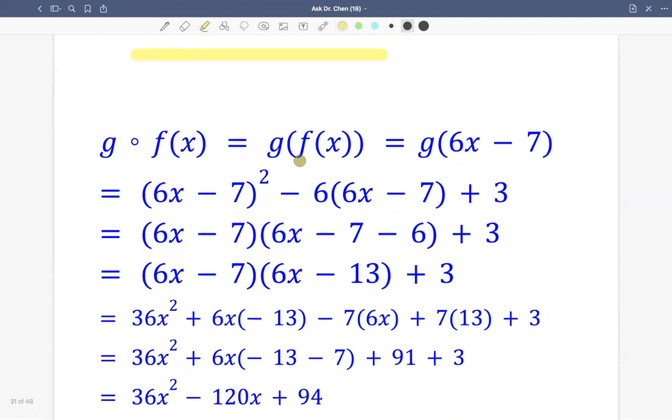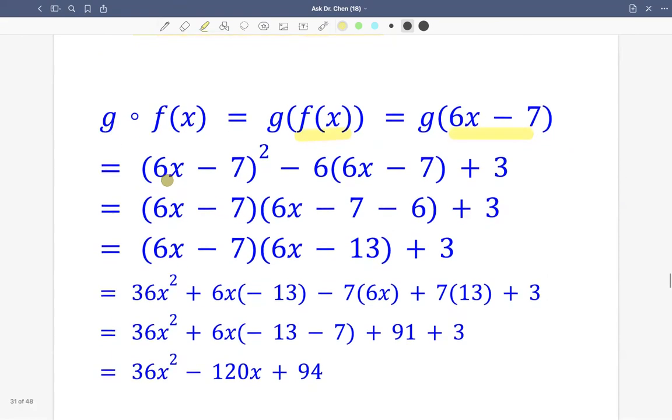Similarly, g composed with f means g takes f as input. What's f? f is 6x minus 7. Now it becomes the input of g. How is g defined? g says square the input, then minus 6 times the input, then plus 3.